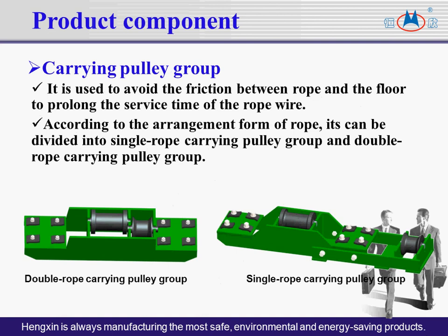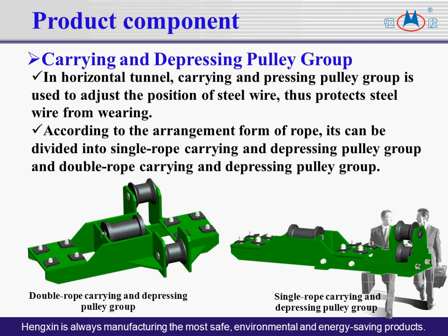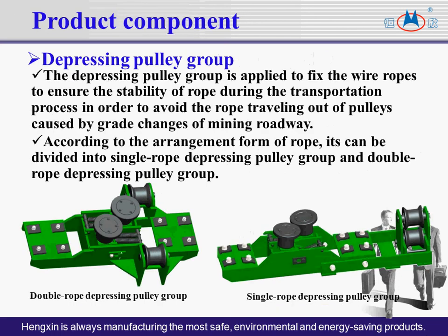Carrying pulley groups are installed along the way to adapt to gradient changes, avoiding friction between the wire rope and the roadway floor and prolonging the service life of wire ropes. The horizontal tunnel carrying and pressing pulley group adjusts the position of the steel wire to protect it from wearing, divided into single rope and double rope types. Depressing pulley groups fix the wire ropes to ensure stability during transportation and to avoid the rope traveling out of the pulley caused by great changes of the mining roadway, divided into single rope and double rope depressing pulley groups.